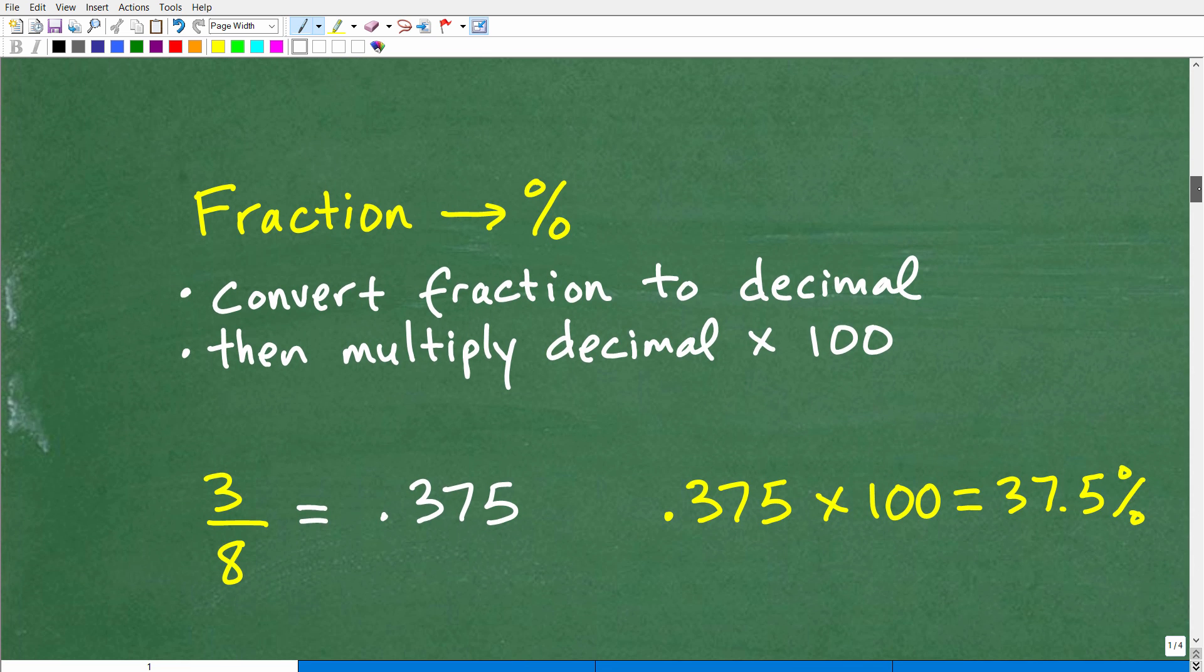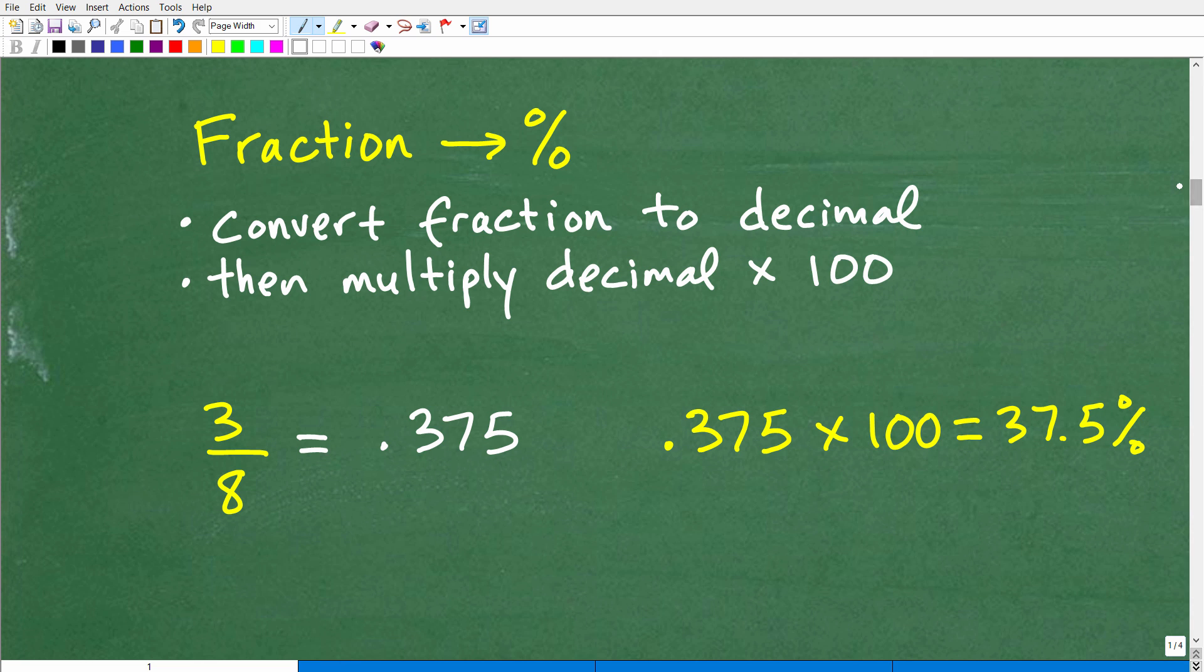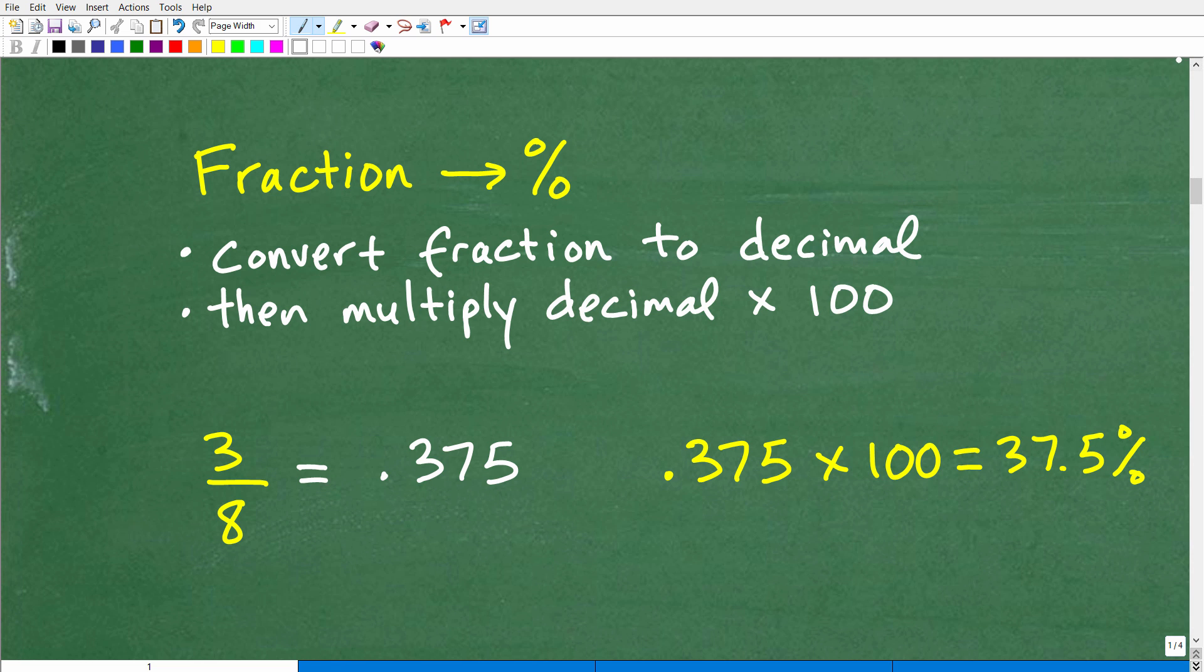How do we express a fraction as a percentage? This is basically how you do it. The first thing you want to do is convert that fraction to a decimal. Then next, we're going to take that decimal and multiply the decimal by 100. Pretty simple arithmetic.